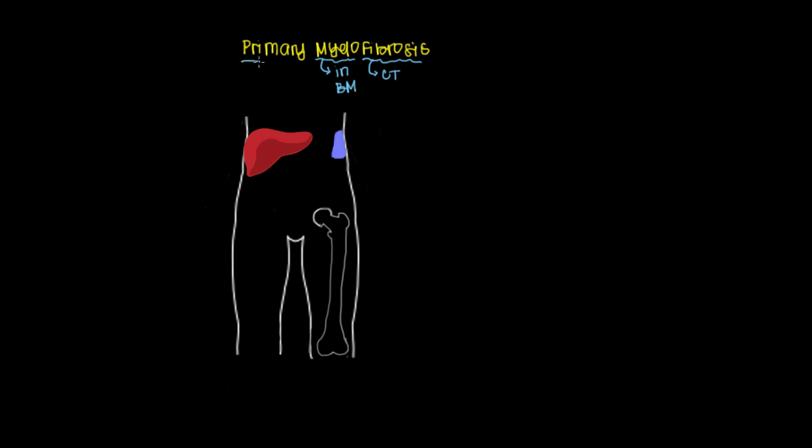Now primary myelofibrosis means that this happens on its own, because there are other types of myelofibrosis associated with other myeloproliferative disorders. This is a disorder where in the shaft of long bones like the femur or other places in your body you make bone marrow.